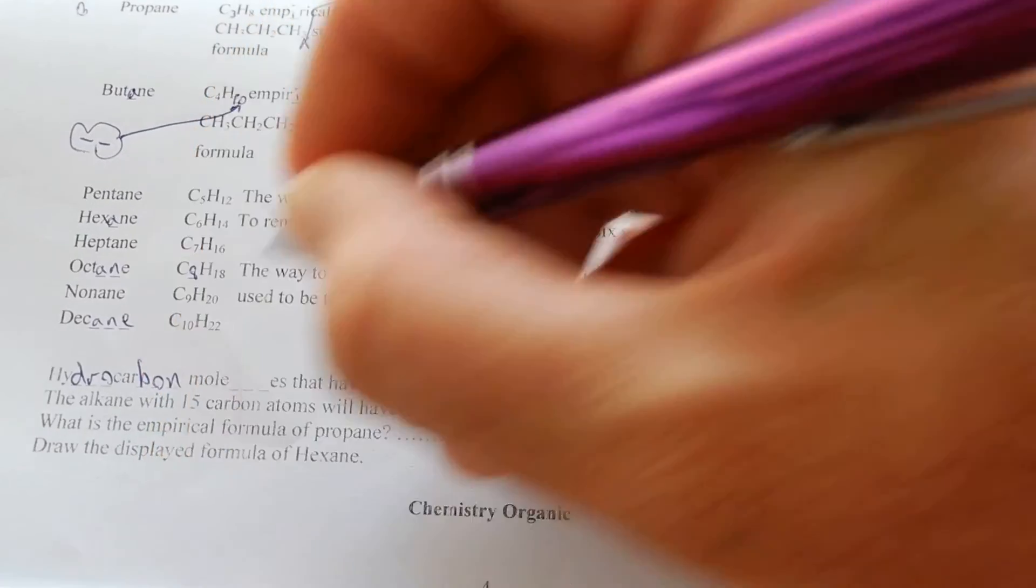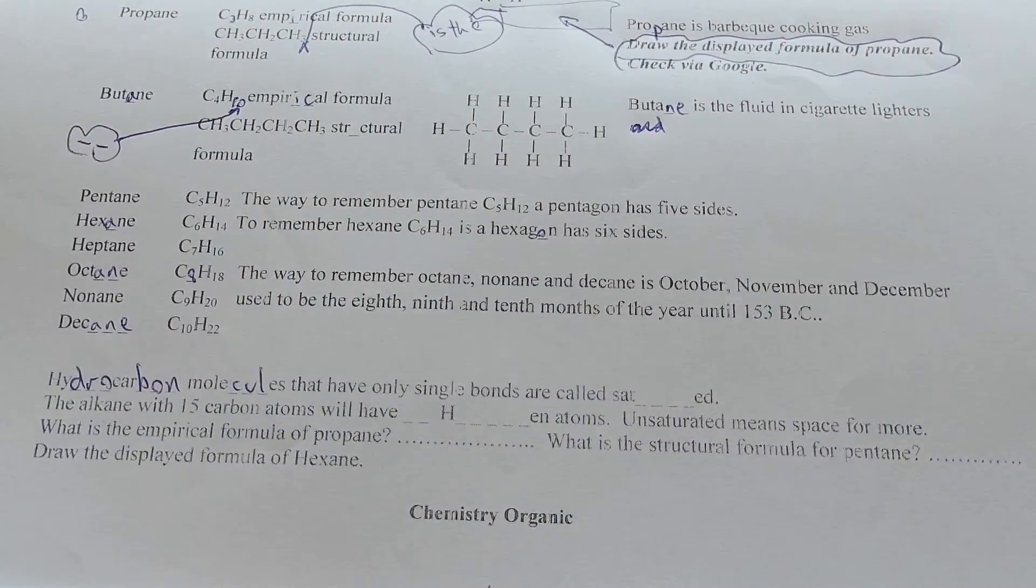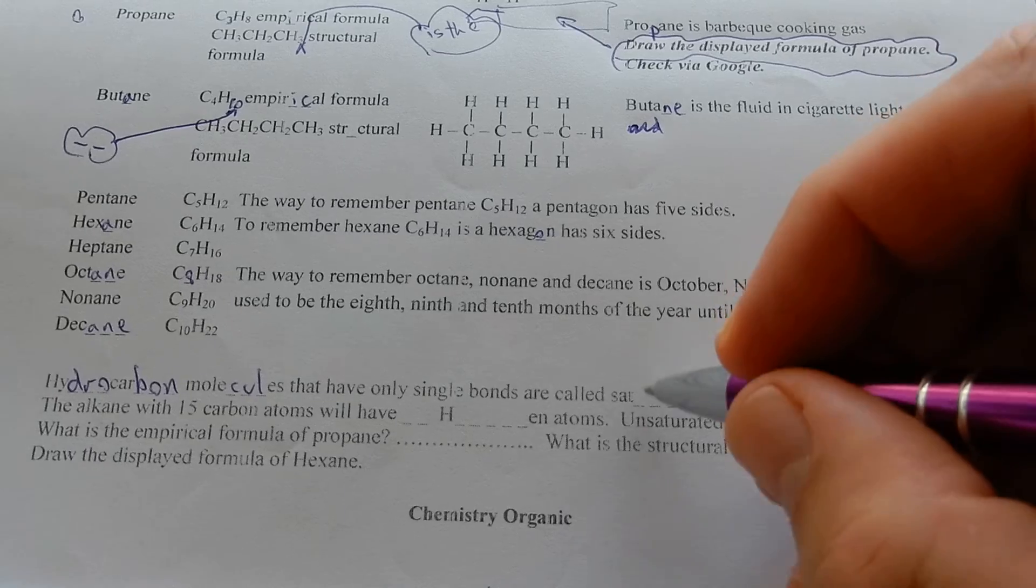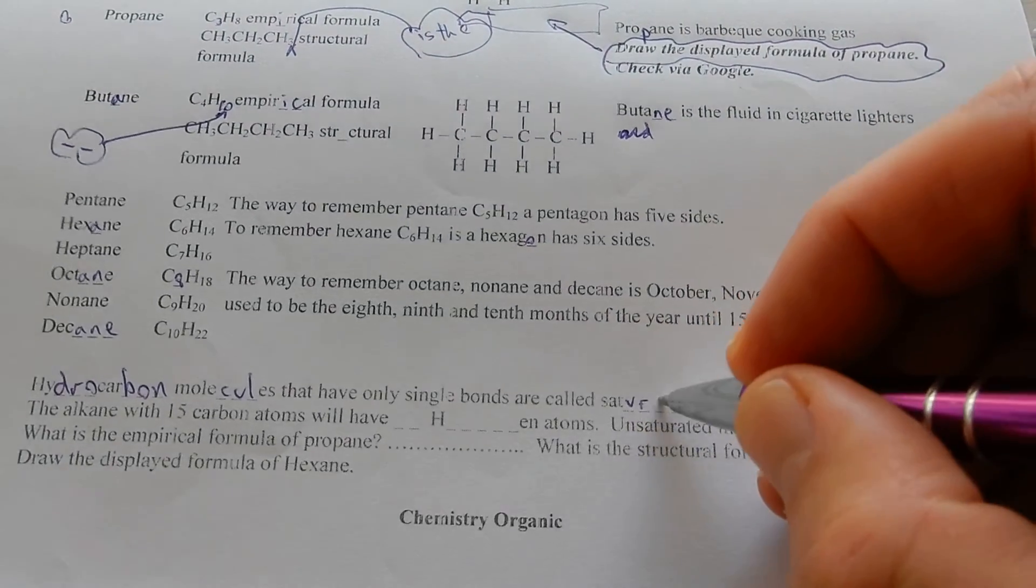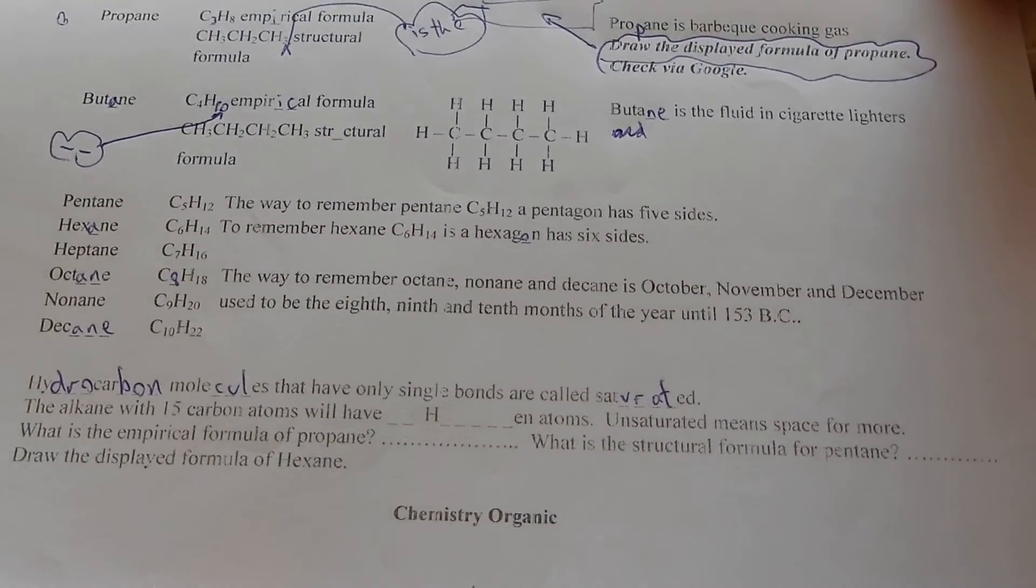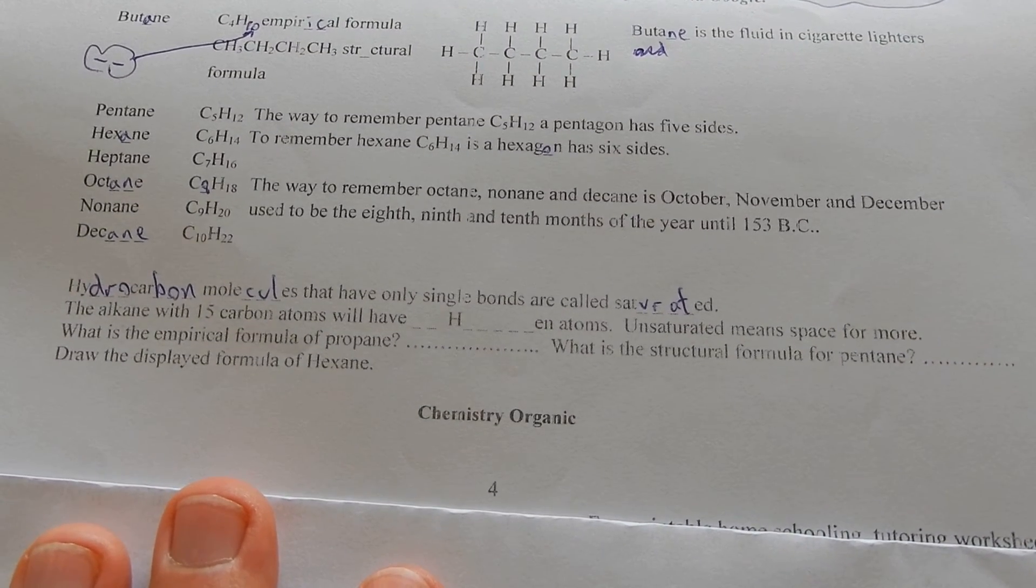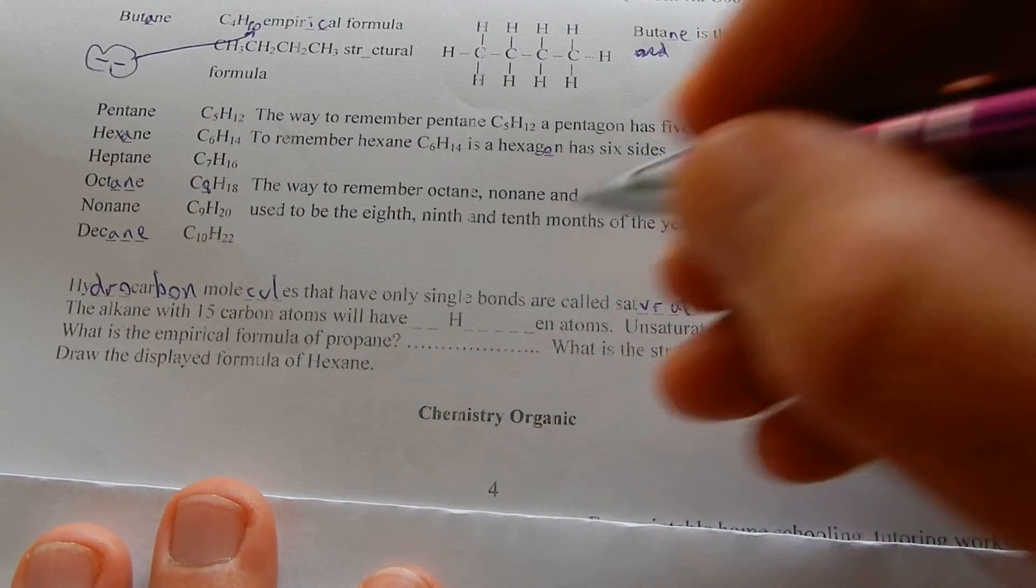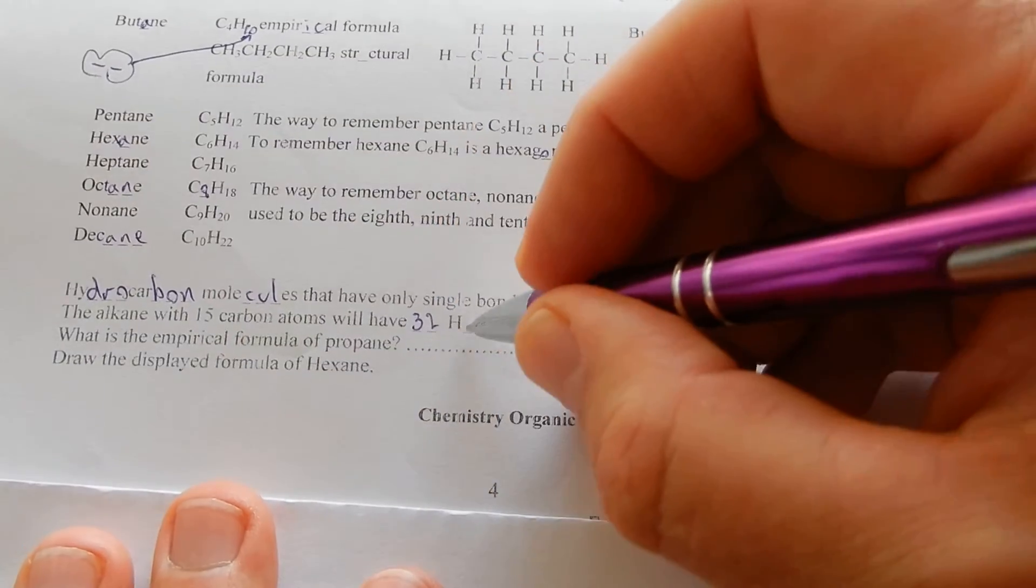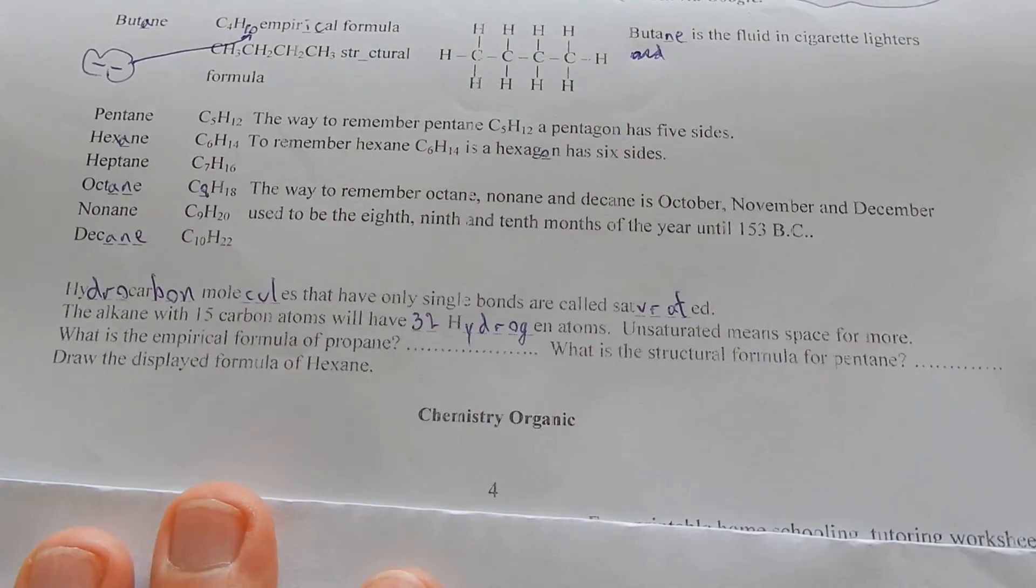Hydrocarbon molecules that have only single bonds are called saturated. The alkane with 15 carbons will have, double it, add two, 32 hydrogen atoms.